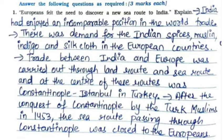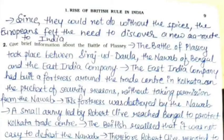Section C: Answer the following questions as required. First: Why did Europeans feel the need to discover a new sea route to India? India had enjoyed an incomparable position in world trade; there was demand for Indian spices, muslin, indigo, and silk cloth in European countries. Trade between India and Europe was carried out through land and sea routes, with Constantinople (Istanbul) in Turkey at the center. After the conquest of Constantinople by the Turk Muslims in 1453, the sea route through Constantinople was closed to Europeans, and since they could not do without spices, they felt the need to discover a new sea route to India.